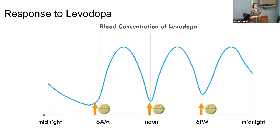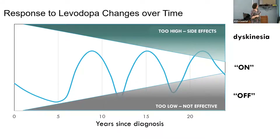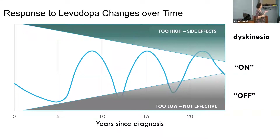Why we have to give levodopa multiple times a day: the concentration just goes up and down throughout the day. In the beginning of the disease, you take your pill at six, noon, and six, and the medication stays in your system — you don't really have off time. But as the disease progresses, you start to get on and off time. On time is when the medication is working; off time develops as the disease progresses. As dopamine cells die in the brain, you can no longer store the levodopa, so the medication acts in shorter and shorter windows.